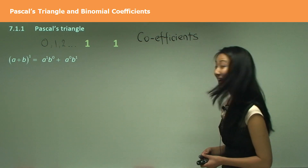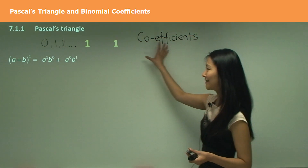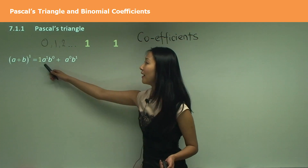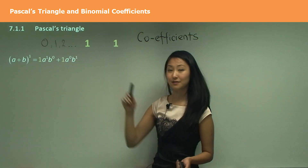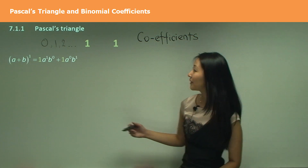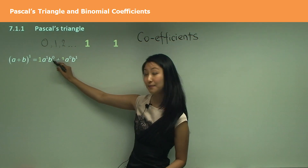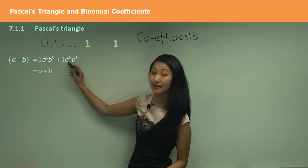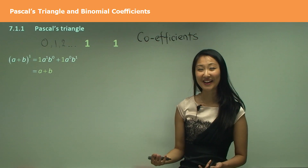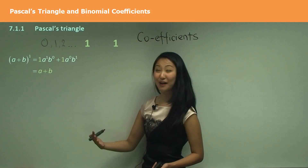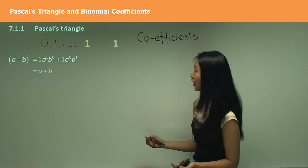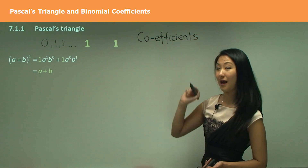Now let's go back to Pascal's Triangle and the coefficients. This 1 and 1 become the coefficients of this expansion — 1 goes in front of the first term, and 1 goes in front of the second term. And all you need to do now is simplify. So that just becomes a times b to the power of 0, which equals a. And a to the power of 0 times b just equals b. So you get a plus b as your expansion for a plus b to the power of 1.